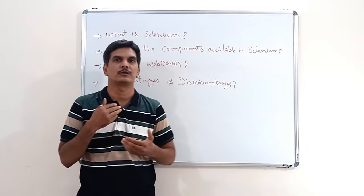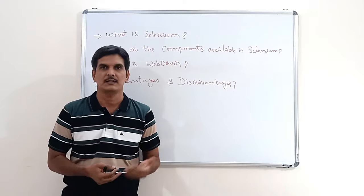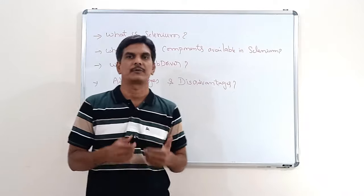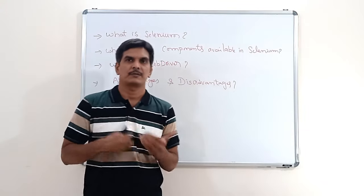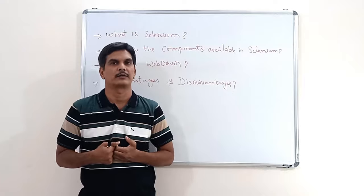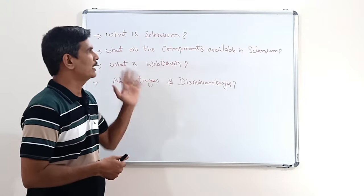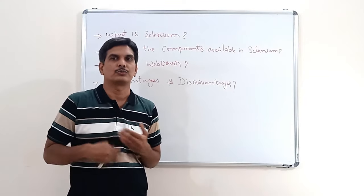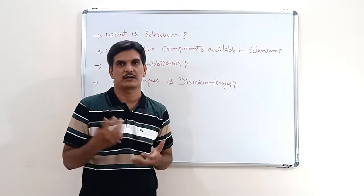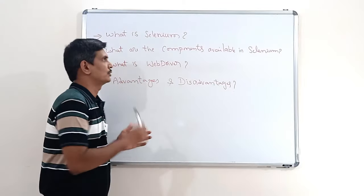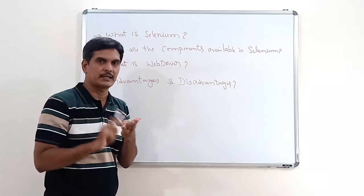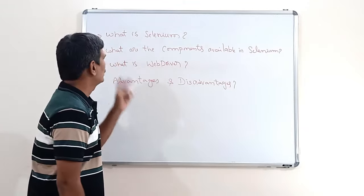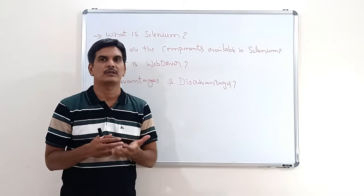From Selenium 2 onwards, Selenium WebDriver was introduced instead of RC, and people started using Selenium WebDriver. RC was deprecated from Selenium 3 onwards, and WebDriver became more popular with higher demand in the current market. We also have Selenium Grid, which is used to execute test cases in remote and distributed environments. Currently, Selenium has three components: Selenium WebDriver, Selenium IDE, and Selenium Grid.